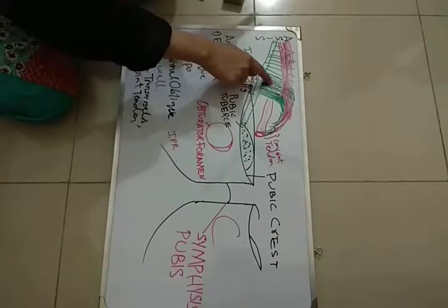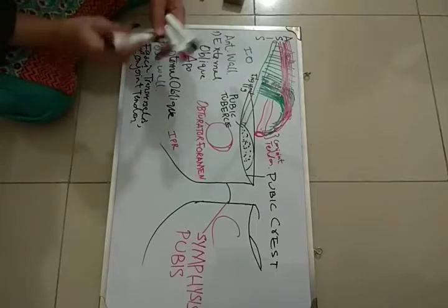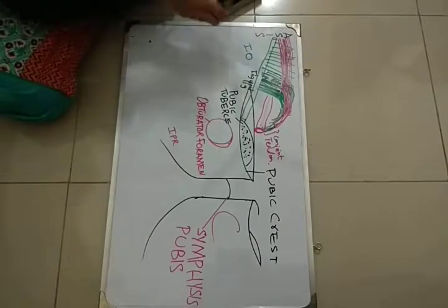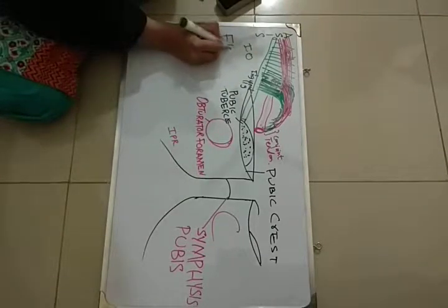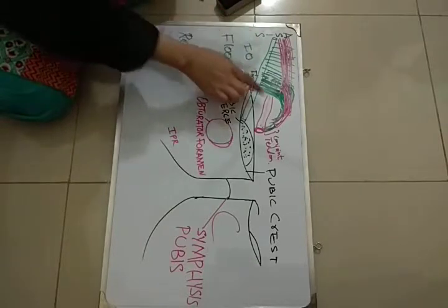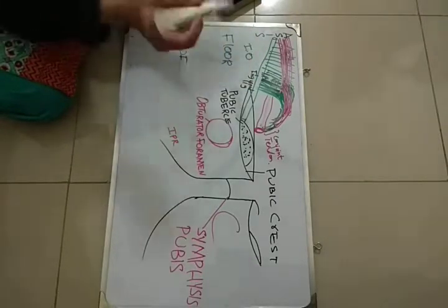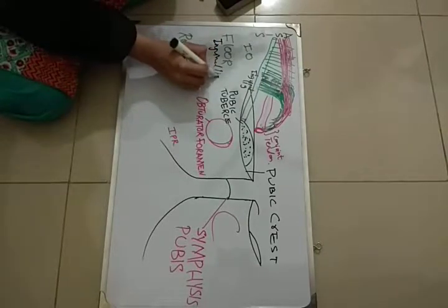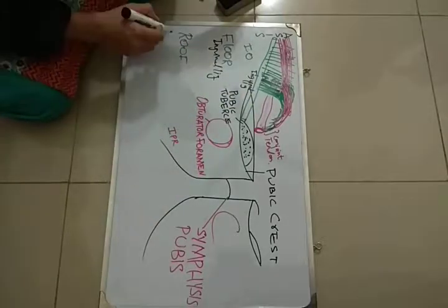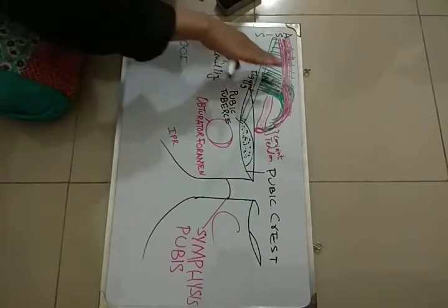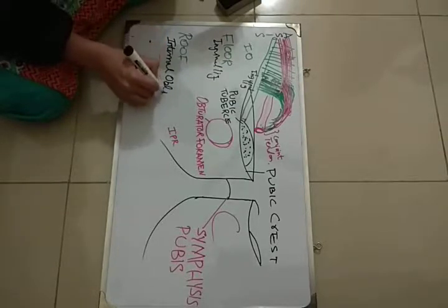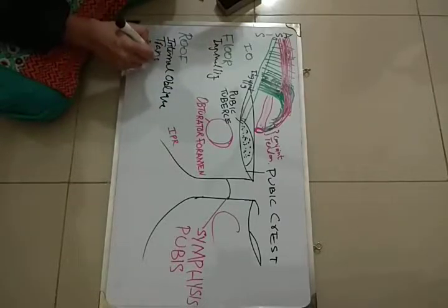This is the deep inguinal ring behind the internal oblique. Now, the floor — as it is evident from the diagram, the floor is formed by the inguinal ligament. The roof is formed by the arching fibers of the internal oblique and transversus abdominis muscle.